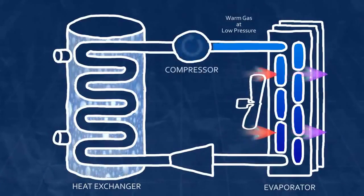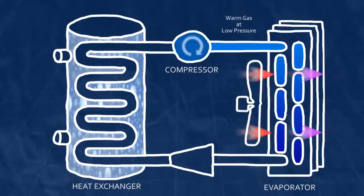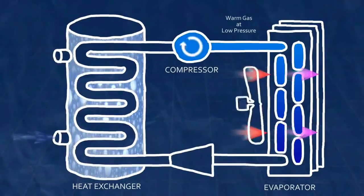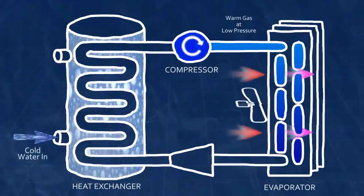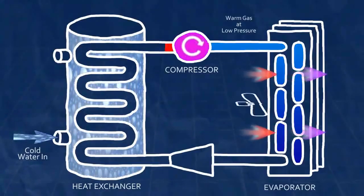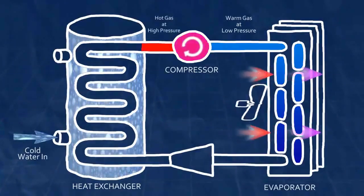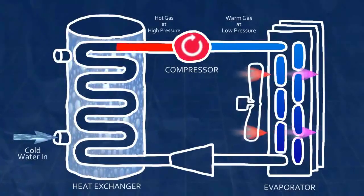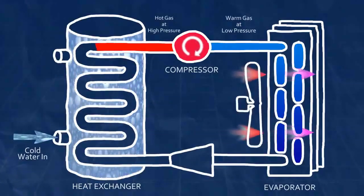The compressor raises the pressure of the gas, which also raises its temperature. Once it's hot enough, the heat will flow from the refrigerant to the water. The compressor next forces the now high-temperature, high-pressure gas further along the cycle into another heat exchanger called the condenser.